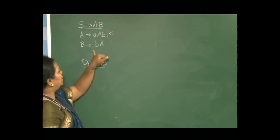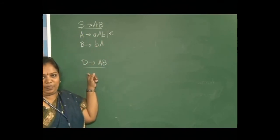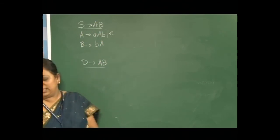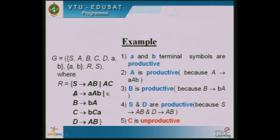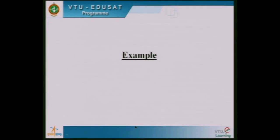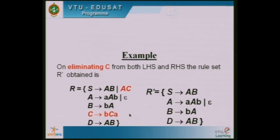Since C is unproductive, it must be eliminated along with any rule containing C. The final grammar obtained is: S → AB, A → AAB | ε, B → BA, and D → AB. C has been removed because it was the only unproductive non-terminal.